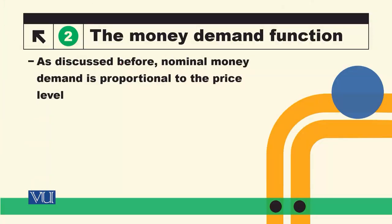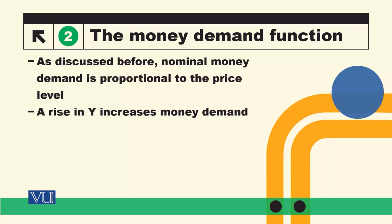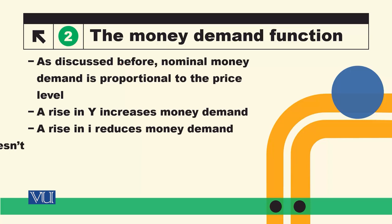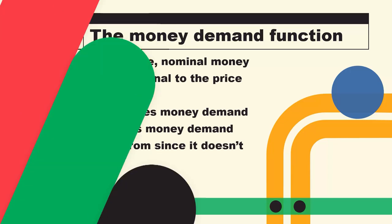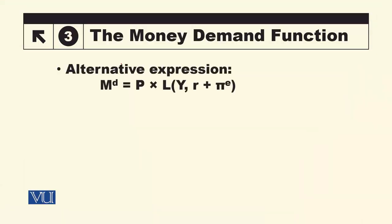So to summarize: nominal money demand is proportional to the price level. A rise in Y will increase money demand, but not proportionally — less than proportionally. A rise in I will reduce money demand — negative relationship. I_M, the interest rate on money (e.g., on current accounts), was dropped from the function because it does not change much. Now we consider an alternative expression for this money demand function. Recall that I is the nominal interest rate.